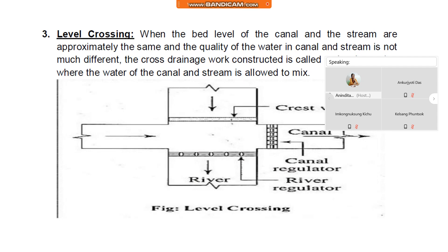When the water levels of the canal and the stream are approximately the same, and the quality of water in the canal and stream is not much different, the cross drainage works constructed is called level crossing, where the water of the canal and stream is allowed to mix. In this figure you can see level crossing.